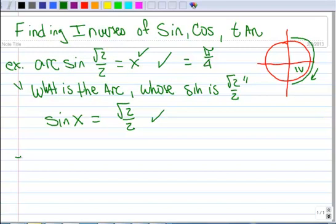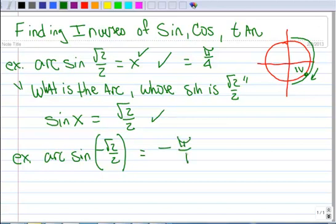Let's do another example, very similar. Arc sine of negative square root of 2 over 2. Where is the arc whose sine is negative square root of 2 over 2? That's right down here. But remember, we have to get to it in the negative direction. So that's negative pi over 4.